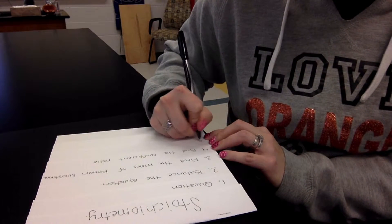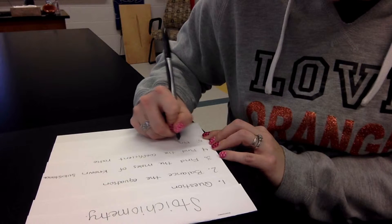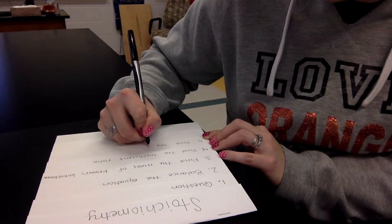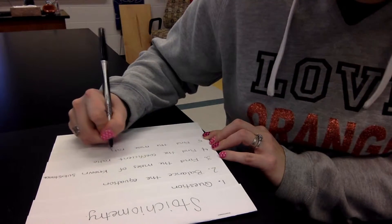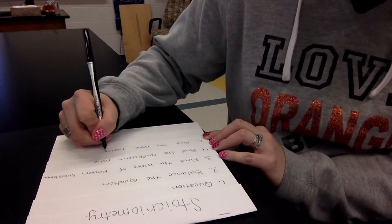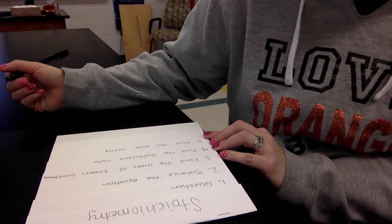Flap five is find the mole ratio. Apparently I don't know how to spell today.